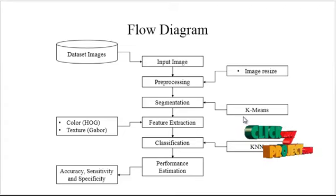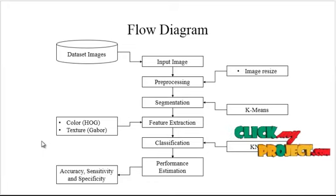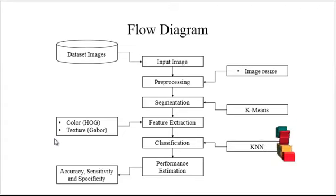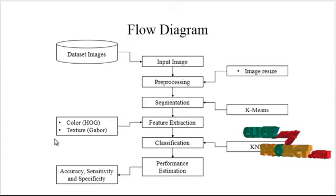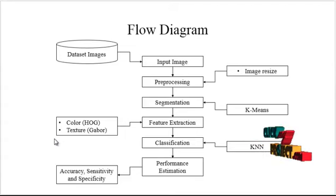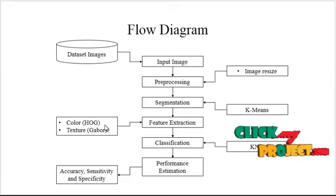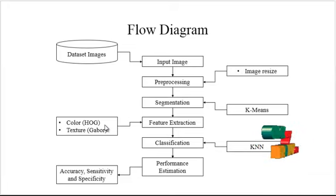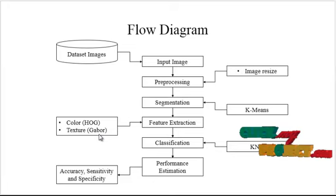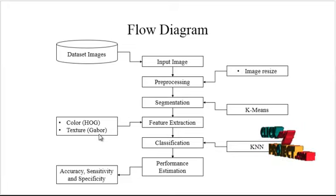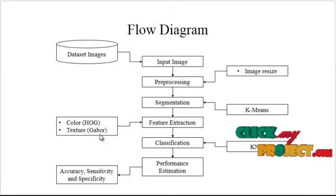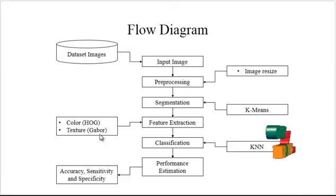After obtaining the fire region, we perform feature extraction. There are two types: color-based feature extraction, applied using the Histogram of Oriented Gradients (HOG) algorithm, and texture-based feature extraction, applied using the Gabor feature extraction method. These two extracted features are then combined to generate the final test feature.